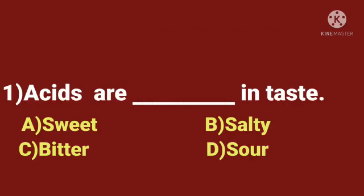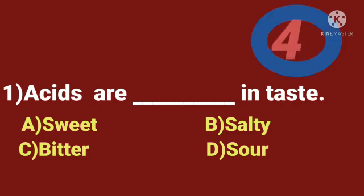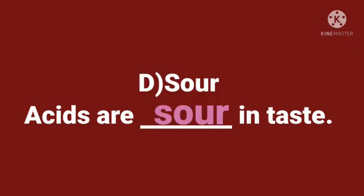First question. Acid is dash in taste. A. Sweet. B. Salty. C. Bitter. D. Sour. Time starts now. And the answer is sour. Acid is sour in taste.